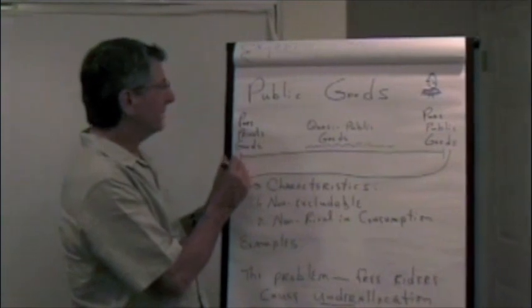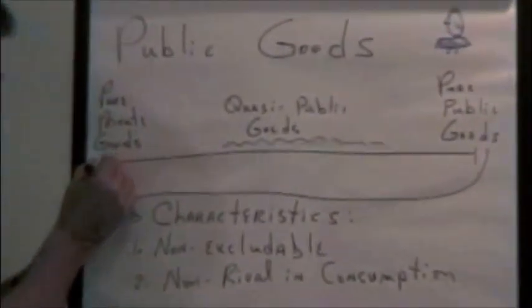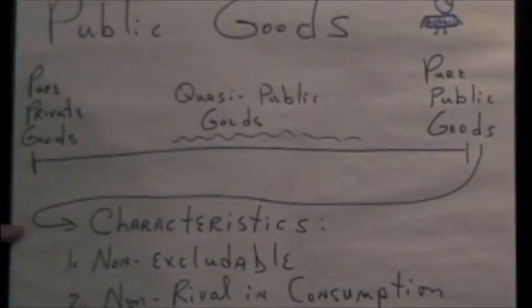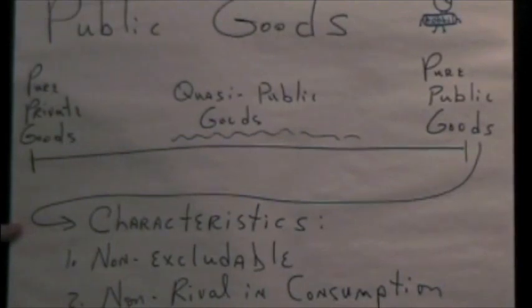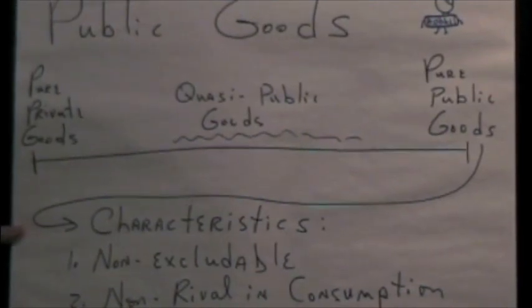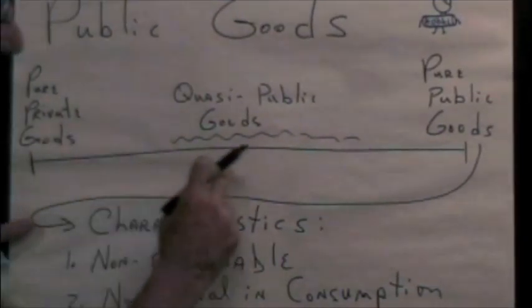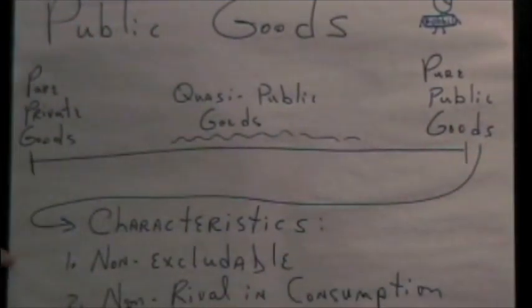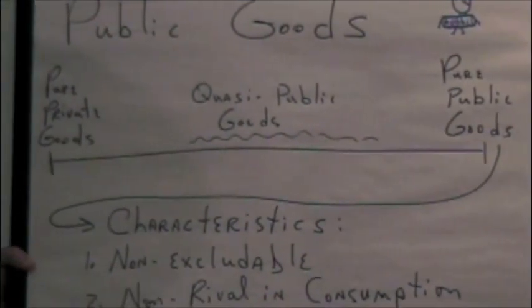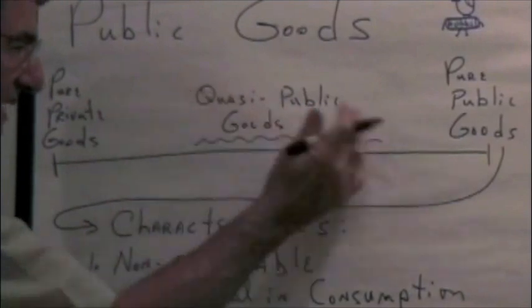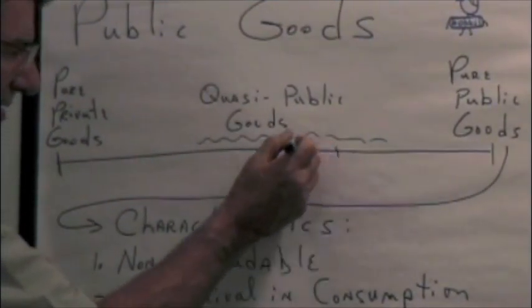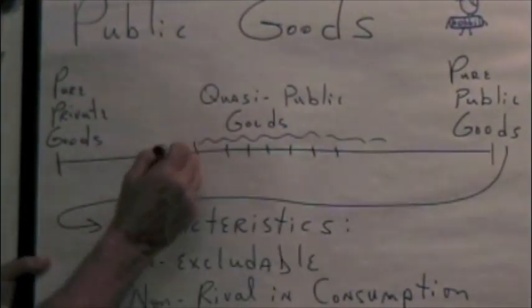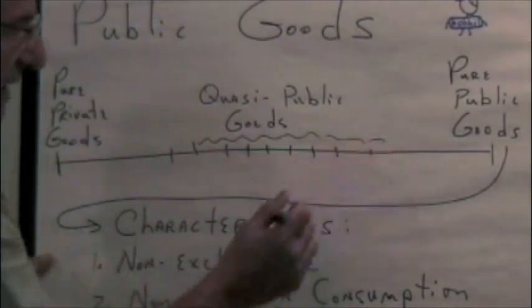There's a continuum that goes from pure private goods, where all of the costs and all of the benefits accrue to an individual, to pure public goods at the other extreme. In the middle, some goods have some characteristics of both private goods and public goods.